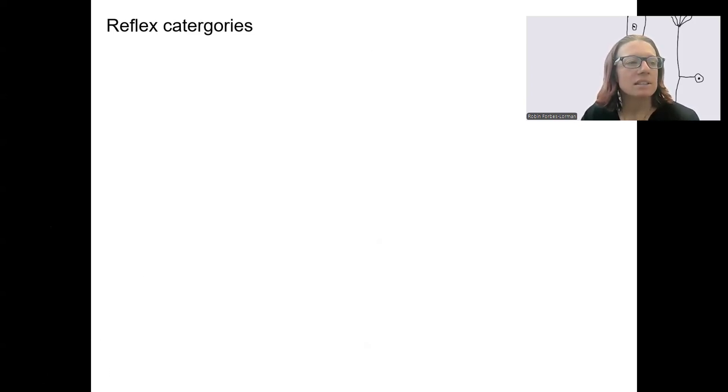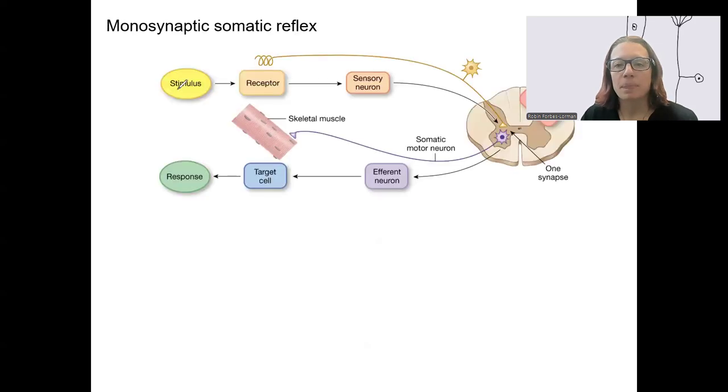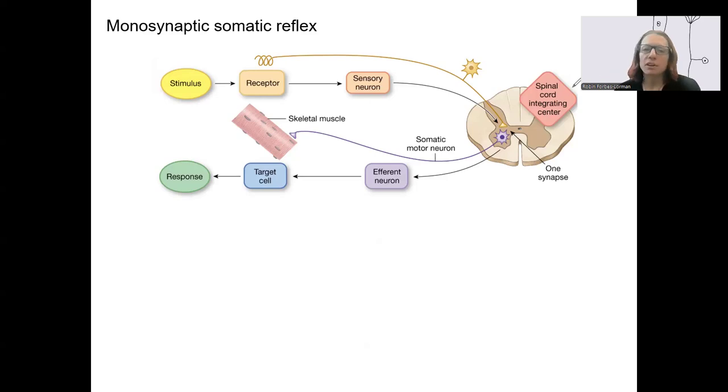Okay. Let's see some examples of these general categories. So, this is not showing all of them, but this first one here, monosynaptic. Monosynaptic refers to that one synapse. It's somatic. We are controlling skeletal muscle. That's our target.